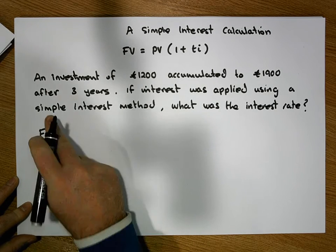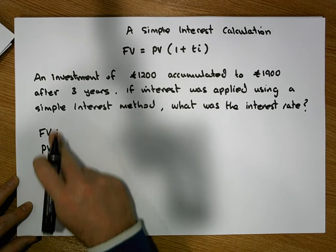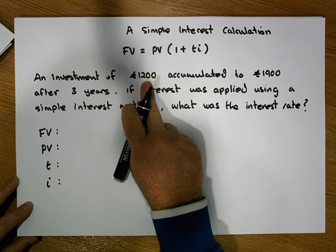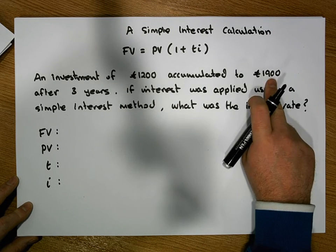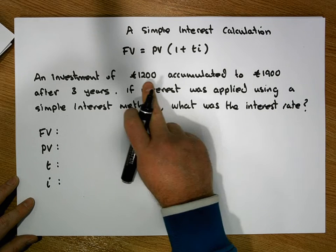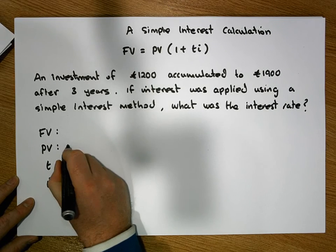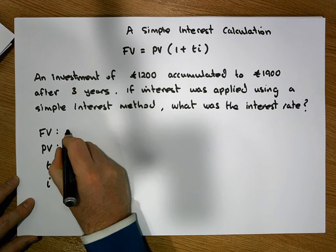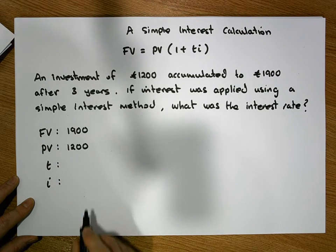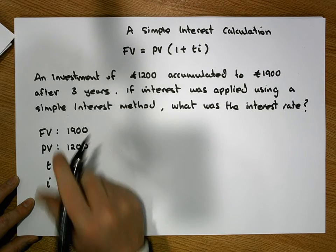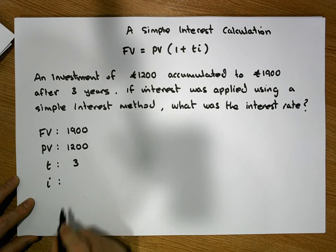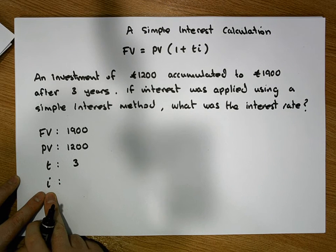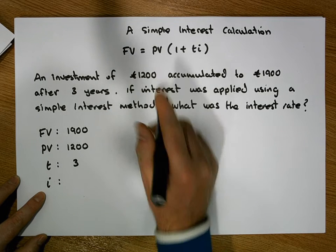Let's substitute everything that we know into these placeholders. An investment of 1,200 euros accumulated to 1,900 euros, so our principal PV was 1,200 and the future value of this account is 1,900. It was left in the account for three years, so T is equal to three. The only piece of information we are missing is I, the interest rate.